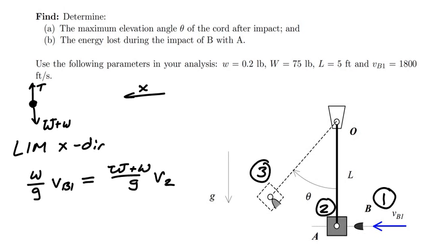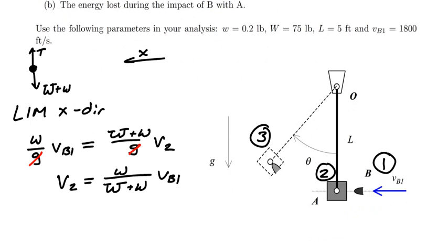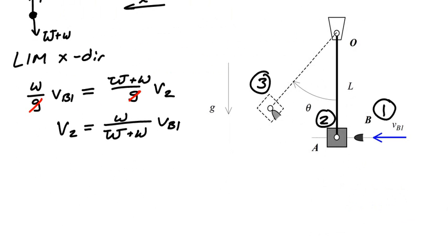So I can go ahead and work this out here. I note that the g's are going to cancel out. And I'll get that the speed post-impact V2 is going to equal the weight of the bullet divided by the weight of the total system times VB1. Now, at this juncture, once I have that, I can go ahead and look at the transition from 2 to 3.